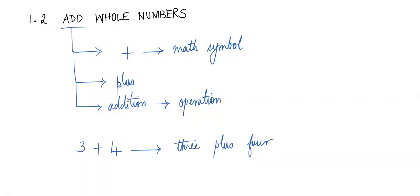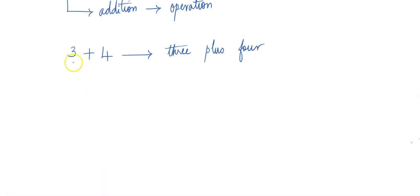The mathematical name for the things that you're adding — the numbers that you're adding — we call them the addends. So this is another addend. This is just to help you get through your assignments where, when they use the word or the language like addend or sum, these are things I want you to cross-check with the e-book, because sometimes there are things they might recall from the book that we probably didn't see in a lecture.